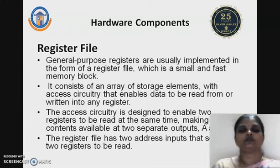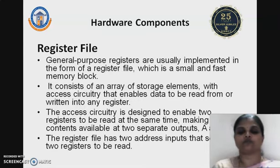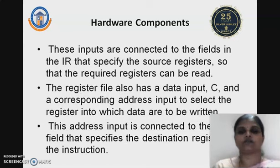Next, coming to the hardware components. There are different hardware components needed for executing any sort of instruction. The first one is the register file. The register file normally has three ports: ports A and B, where the access circuitry is designed to enable two registers to be read at the same time, making their contents available at two separate outputs A and B. It uses appropriate addresses to read content from the register file. Additionally, there is port C, where data input and the corresponding address input are used to select the register in which data is to be written.